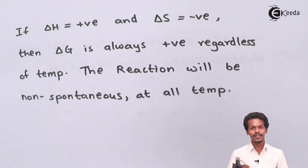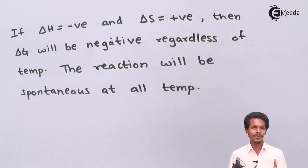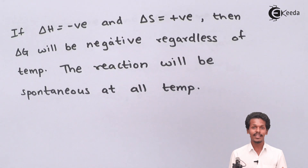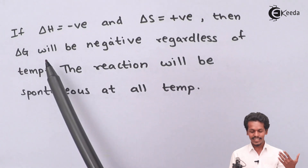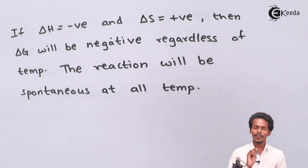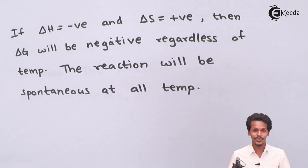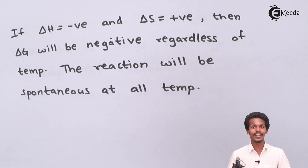When ΔH is negative and ΔS is positive, this gives more assurance that the reaction is both exothermic and spontaneous. The reaction will be spontaneous at all temperatures, independent of temperature. This covers all the conditions about the importance of Gibbs free energy and how it plays a very important role in understanding spontaneous processes.